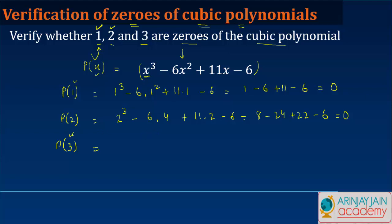How about 3? This one we'll do more quickly. 3³ gives 27, minus 6 times 3² (which is 9), so minus 54, plus 11 times 3 gives 33, minus 6.